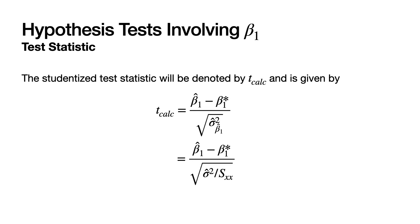The test statistic for each of these tests will be the studentized test statistic, denoted T_calc. The expression for T_calc is beta_1_hat minus the hypothesized value beta_1 star, divided by the estimated standard error of beta_1_hat. That estimated standard error is equal to the square root of sigma_hat_squared divided by S_xx.